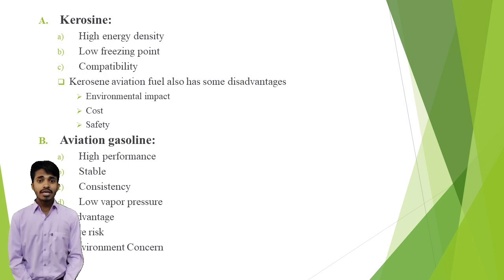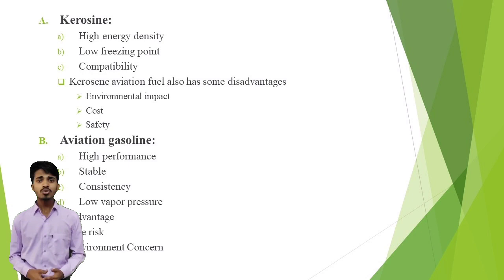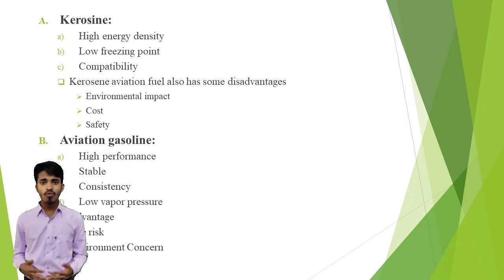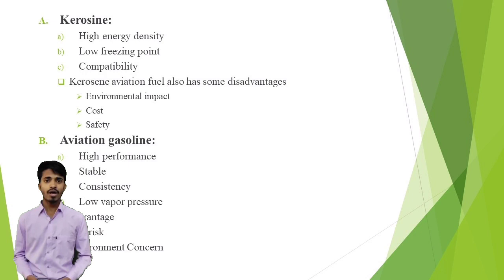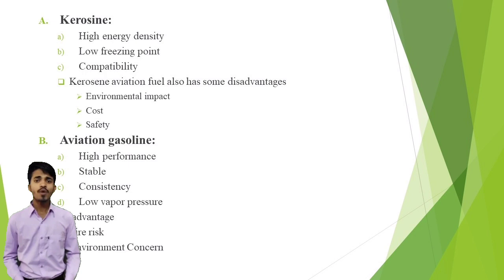Now we discuss about kerosene. It is a colourless liquid that is derived from crude oil through a refining process. The fuel has a relatively high energy density and is used in commercial aviation as well as in military aircraft. Kerosene aviation fuel has a high energy density, which means that it can provide more energy per unit of volume than other types of fuel, and can be used in a wide range of aircraft.